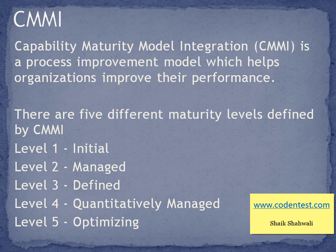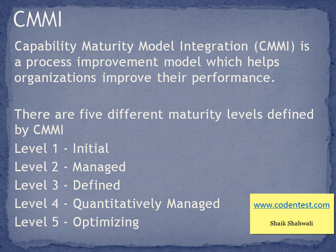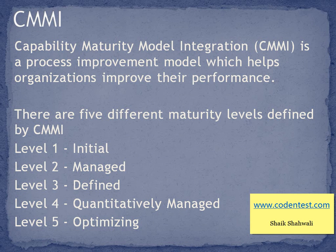Level four is better than level three. Next is CMMI level five — Optimizing. Apart from all the level four qualities, the focus is on improving the process. Level five companies will improve the process project by project, with a strong focus on improving process continuously.